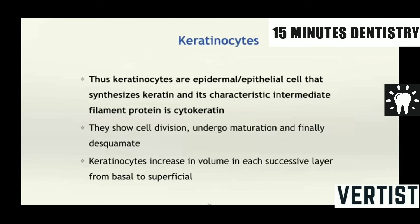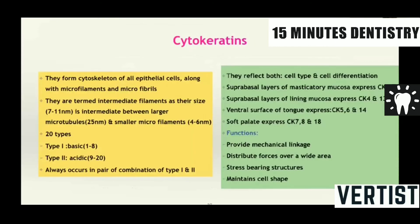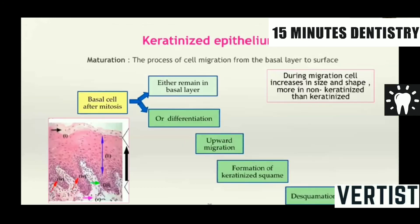Apart from these, in the oral epithelium, there are keratinocytes. All these cells belonging to the different strata are called as keratinocytes. They synthesize keratin and its characteristic intermediate filament is called as cytokeratin. This cytokeratin is of 20 different types and they are always present in pairs. Type 1 is basic from 1 to 8 and type 2 is acidic from 9 to 20. And we can see that in the supra-basal layer, they express cytokeratin 1 and 13. The cell type and cell differentiation reflects both. The basic function of this cytokeratin is to provide a mechanical linkage to distribute the forces and stress-bearing structures and also maintain the cell shape.